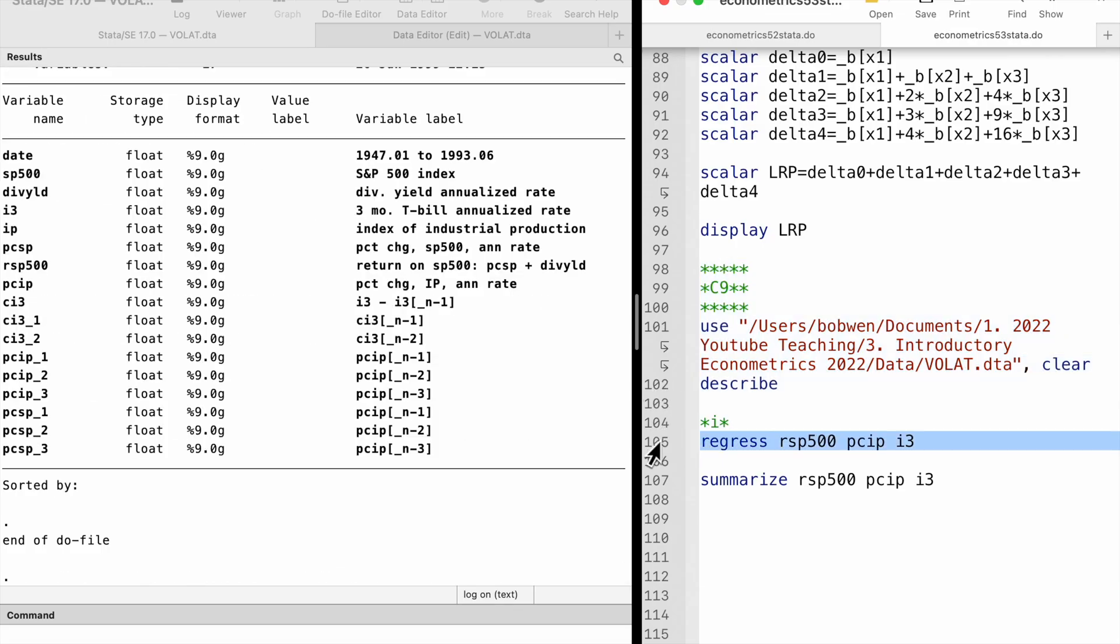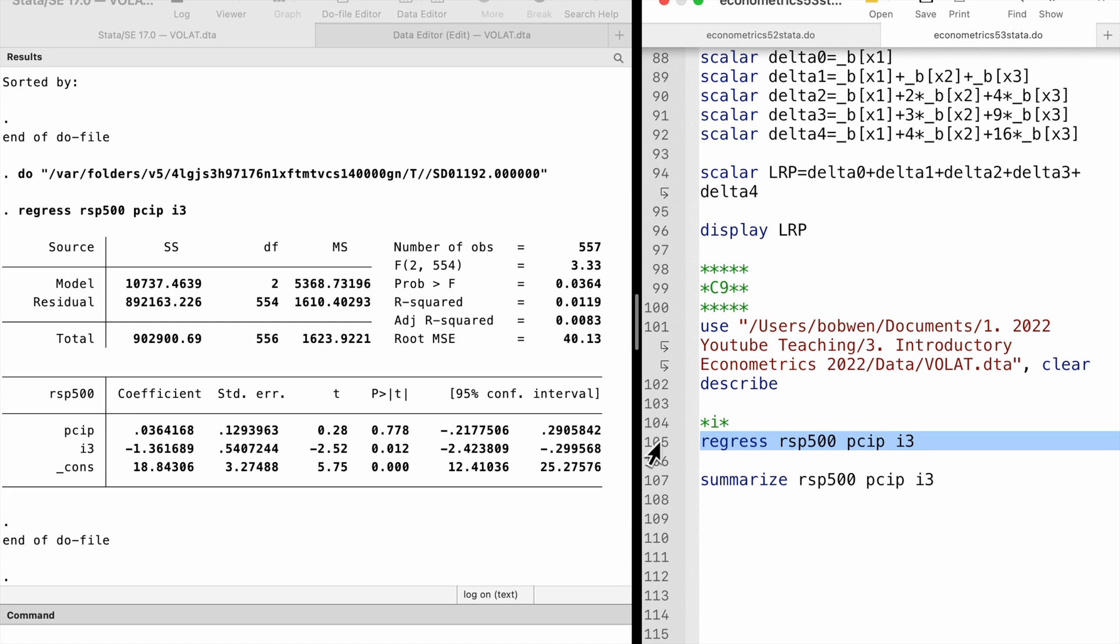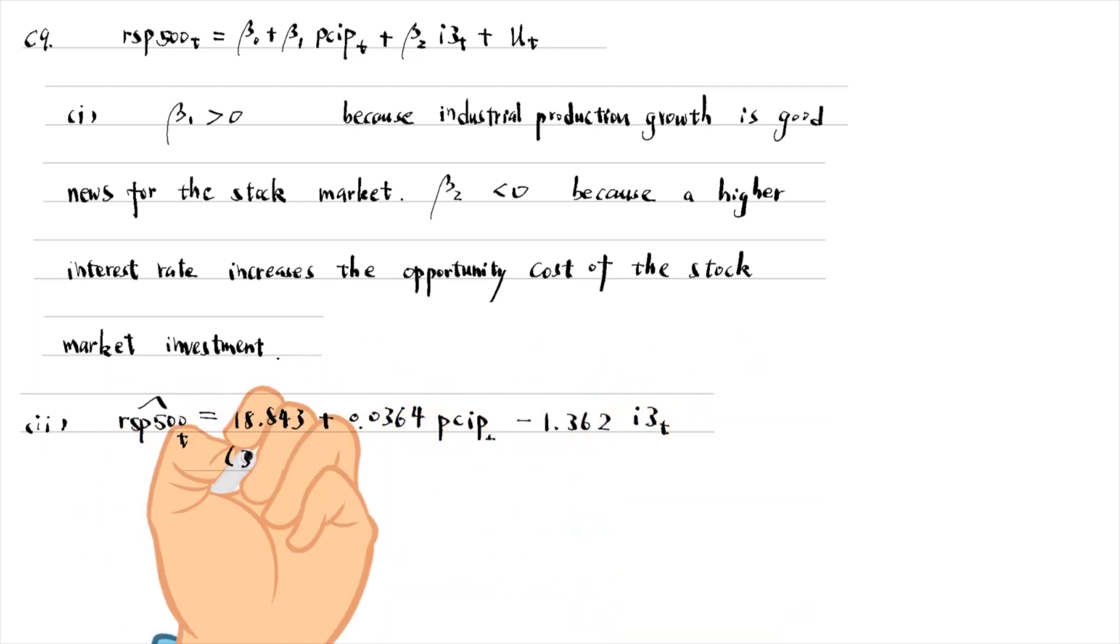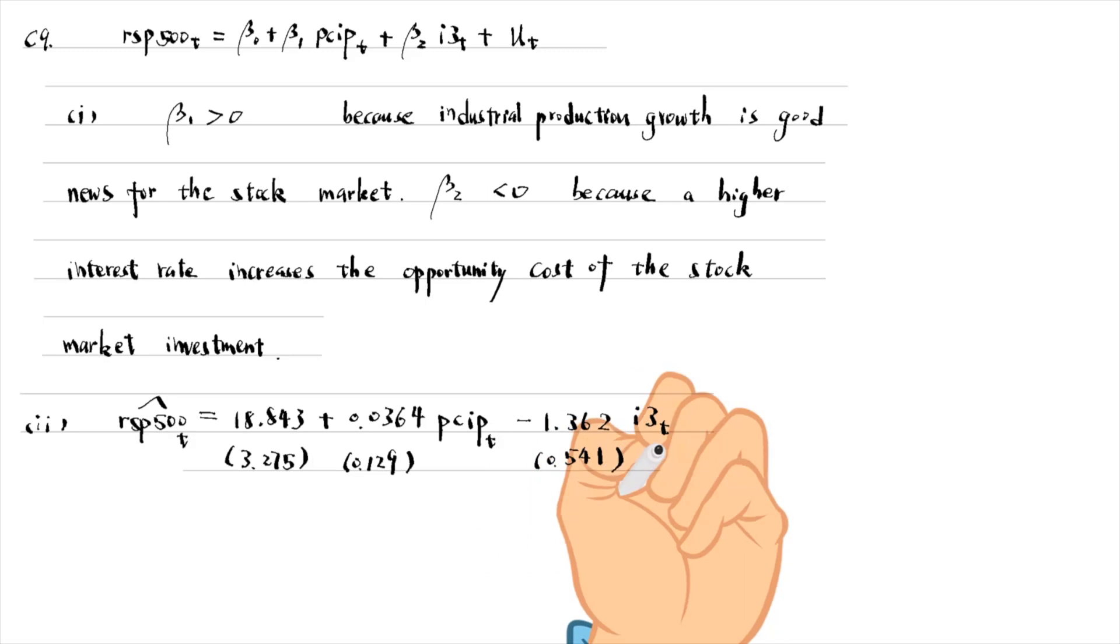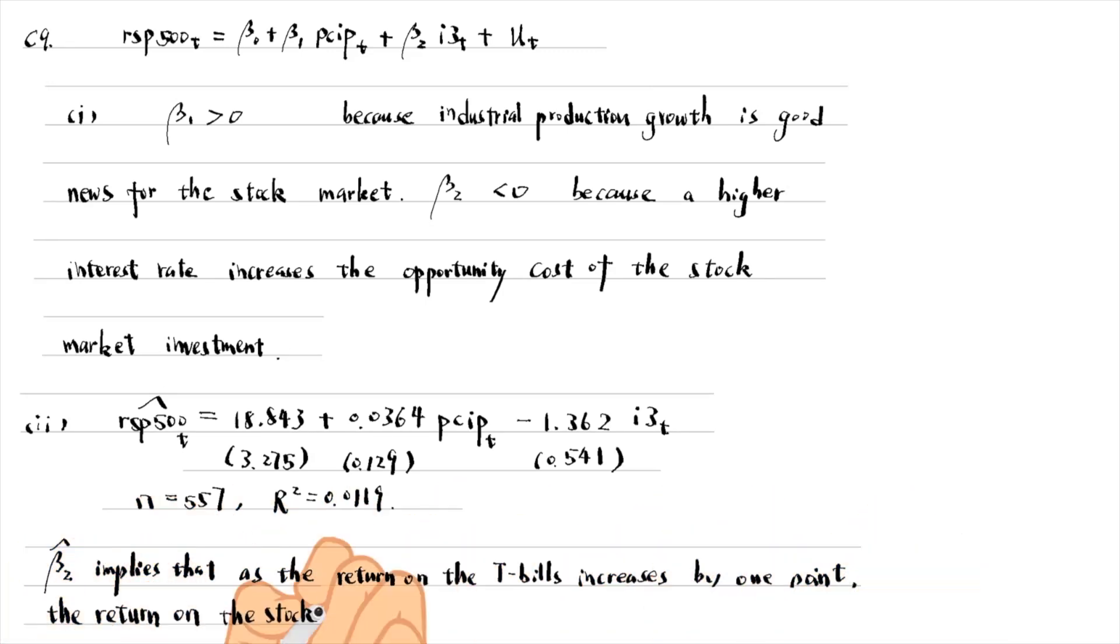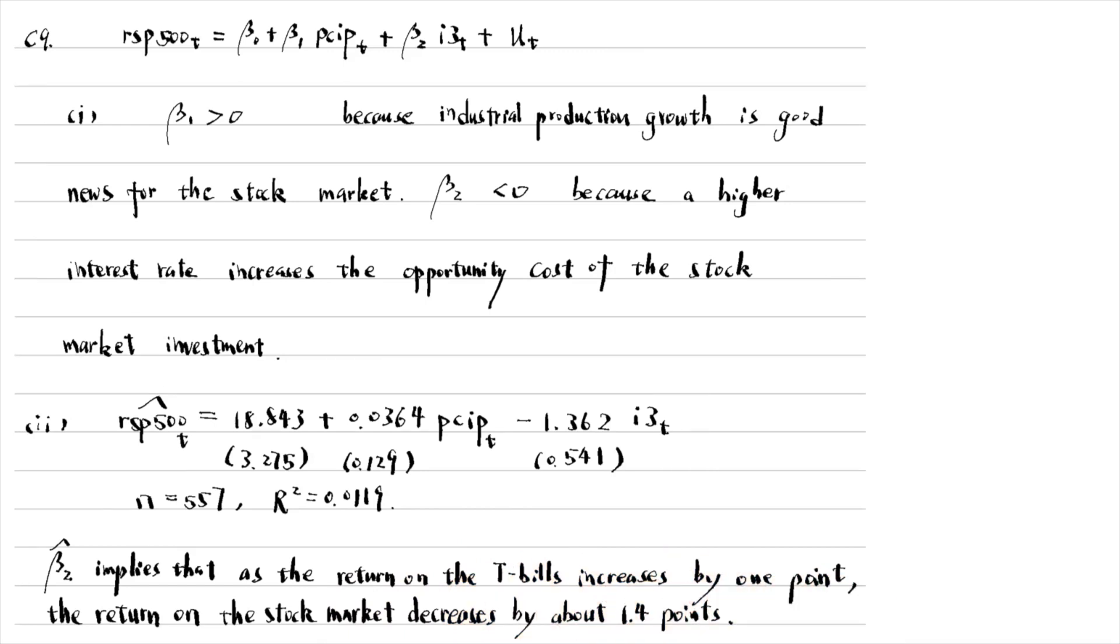In part 2, we estimate the model by OLS. The estimate of beta 1 is economically small and statistically insignificant. The estimate of beta 2 is minus 1.362, which implies that as the return on the 3-month t-bills increases by 1 point, the return on the stock market decreases by about 1.4 points, holding the industrial production growth fixed. It is statistically significant at the 5% level with a t-statistic of minus 2.52 and a p-value of 0.012.